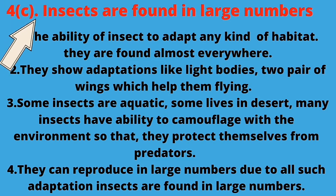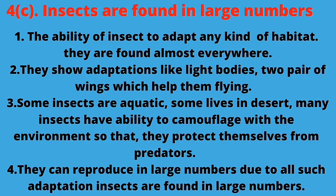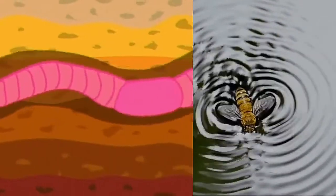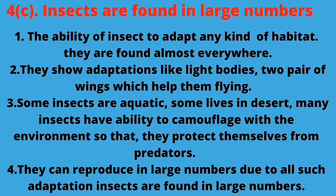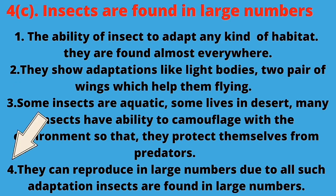The next statement is: insects are found in large numbers. This is because of their ability to adapt to any kind of habitat. Different insects show adaptations like light bodies and a pair of wings which help them fly. Some insects live in deserts, some in water, and they can change their color when they spot predators. These insects also reproduce in large numbers. Answer: (1) The ability of insects to adapt to any kind of habitat means they are found almost everywhere. (2) They show adaptations like light bodies and a pair of wings which help them fly. (3) Some insects are aquatic, some live in deserts. (4) Insects have the ability to blend with the environment to protect themselves from predators. (5) They can reproduce in large numbers. Due to all such adaptations, insects are found in large numbers.